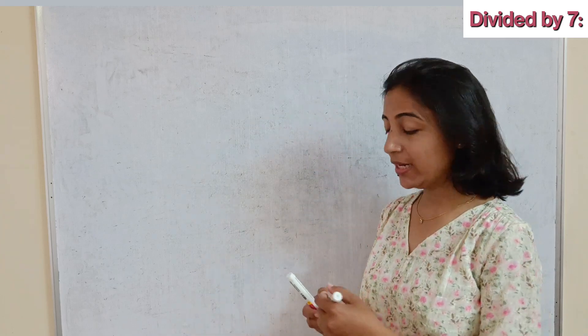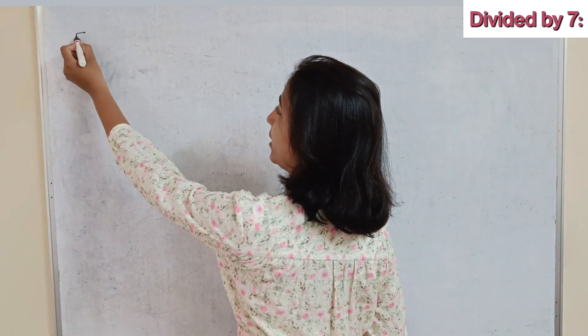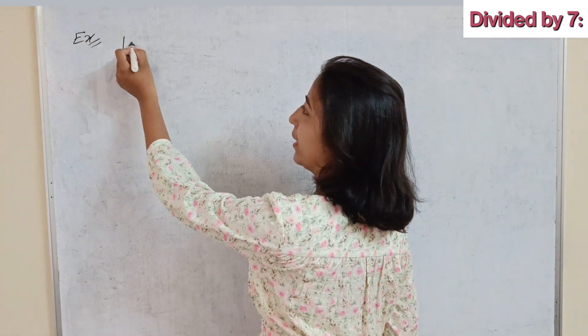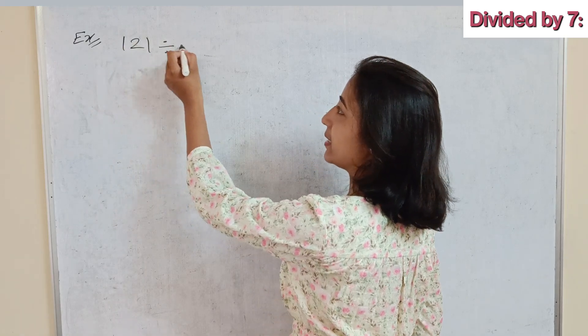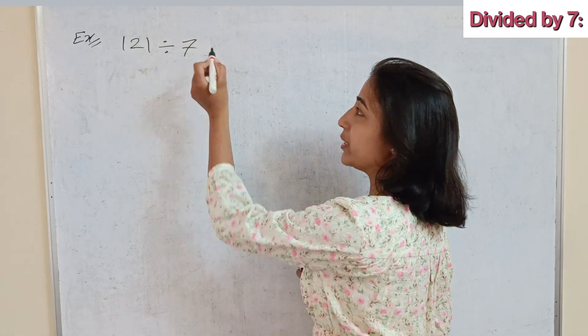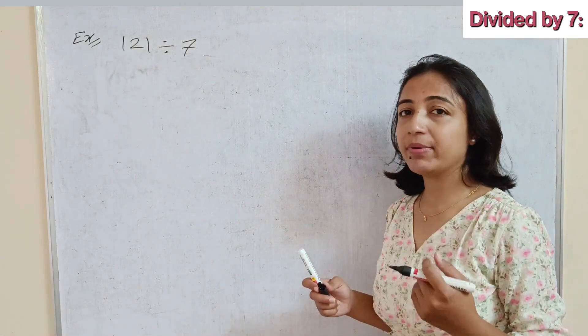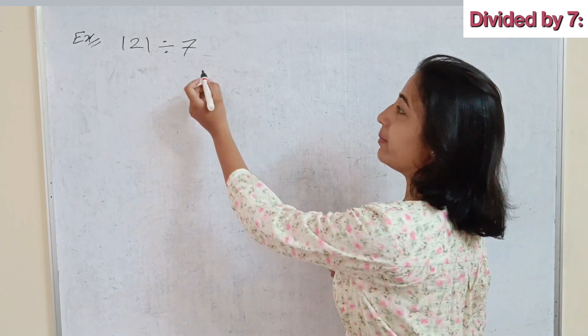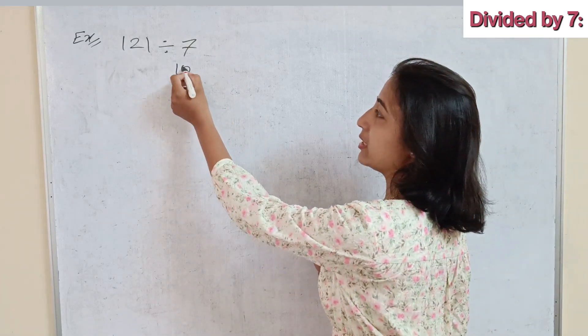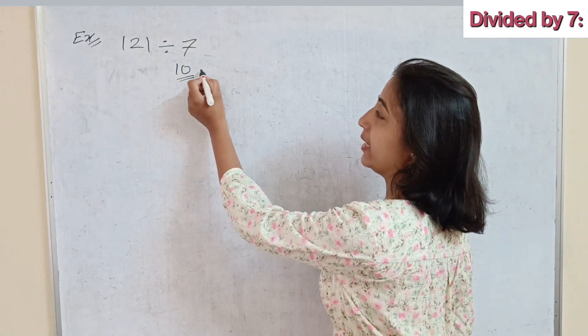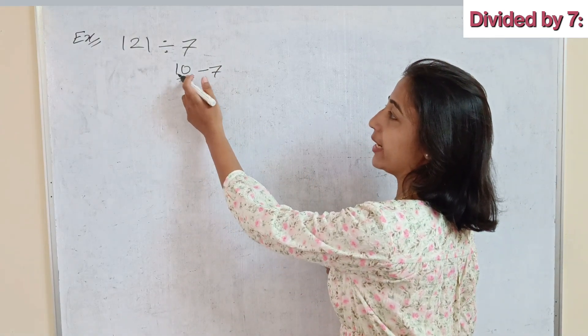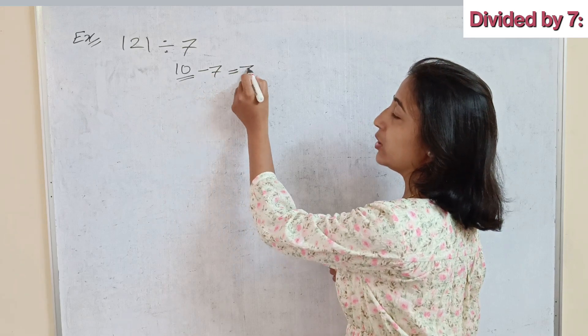Hi everyone, welcome to learn the next concept of Vedic Maths — how to divide any number by 7. Here I will write a random number. Let's suppose we are given the question: can the number 121 be divided by 7? So 7 is near to the base 10, and 10 minus 7 is 3, meaning 7 is 3 less than 10.